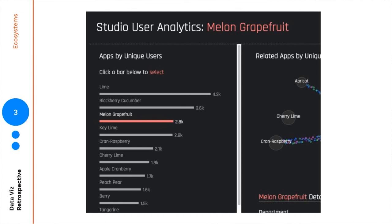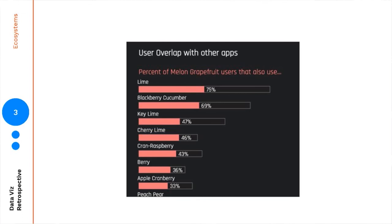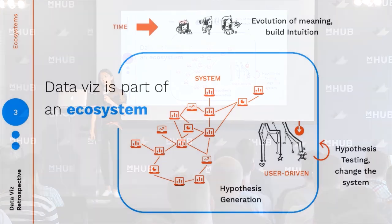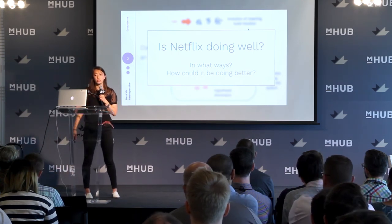I masked the data here — imagine these LaCroix flavors are actually different dashboards at Netflix. We zoom into the melon grapefruit dashboard, the third most consumed one, and look across different departments to understand what department it's most relevant for. We can see it's relevant to 46 percent of the corgi department, a lower percentage than the pugs. Or we might look at how many people consuming melon grapefruit are also consuming other dashboards — 75 percent of them are also consuming lime. This reinforces the idea that all of these dashboards are living in a constantly evolving system, all trying to understand one ambiguous question: is Netflix doing well?